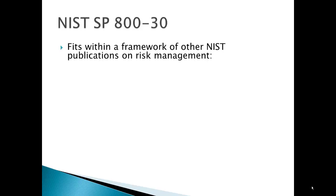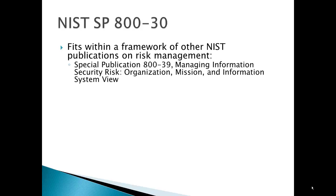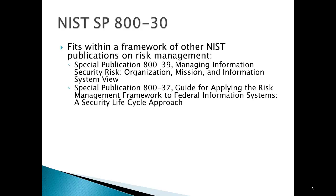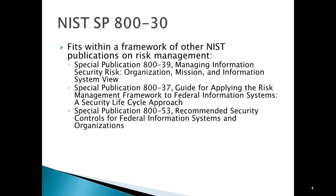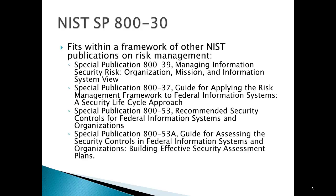NIST SP 800-30 fits within a framework of other NIST publications on risk management. These include Special Pub 800-39, Managing Information Security Risk: Organization, Mission, and the Information System View; 800-37, Applying the Risk Management Framework to Federal Information Systems — a Security Lifecycle Approach; and 800-53, Recommended Security Controls for Federal Information Systems and Organizations. 800-53A is a guide for assessing the security controls. Assessing control effectiveness is a slightly different task than assessing risk.